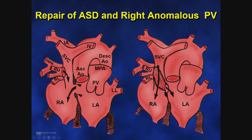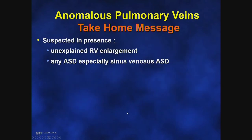When these patients return for imaging after surgery, you must confirm the patency of both the pulmonary venous connection and the systemic venous connection — ensuring the SVC is not obstructed and there is no residual leak.